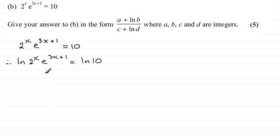And when you've got a product, remember that with logs we can split this up to the natural log of the first part, 2 to the power x, and then we add this to the natural log of e to the power 3x plus 1. And then this will equal the natural log of 10.